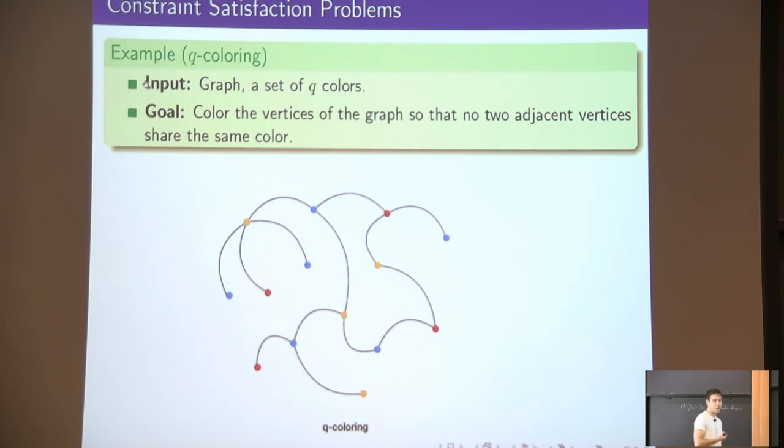This is a constraint satisfaction problem in the sense that you can imagine a variable sitting on every vertex that can take two values, we call them colors, and a constraint sitting on every edge that basically forbids every coloring for which the variables of the constraint, the variables of the edge, get the same value.